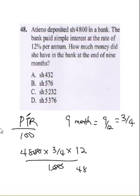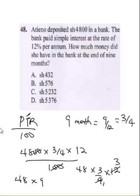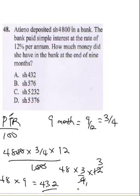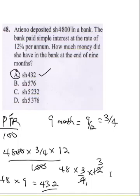After cancelling double zeros, what we have is 48 times 3 over 4 times 12. 4 into 48 gives 12, giving us 12 times 3 times 12, then 4 into 12 gives 3. So we have 48 times 3 times 3, which is 48 times 9. 9 times 8 is 72, put 2 carry 7. 9 times 4 is 36, plus 7 gives 43. So our interest is 432.